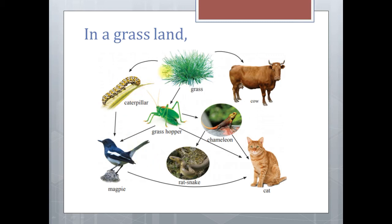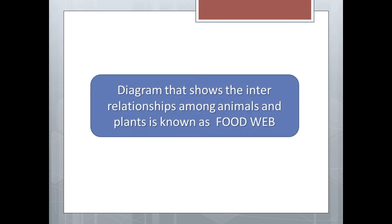Here they are connected as a web. Now you must understand what is a food web. The diagram that shows the interrelationships among animals and plants is known as food web.